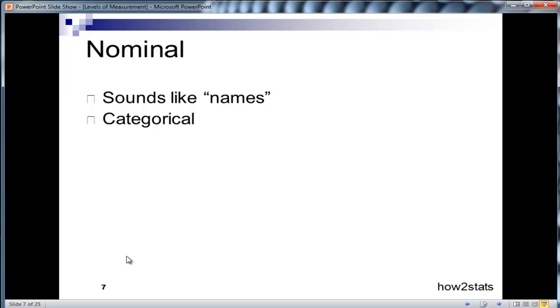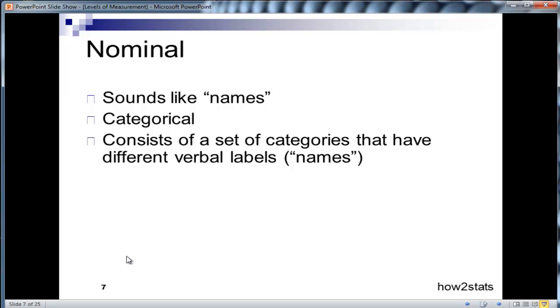That should be the word that comes to mind next—categorical. Because a nominal level of measurement consists of a set of categories that have different verbal labels or names.